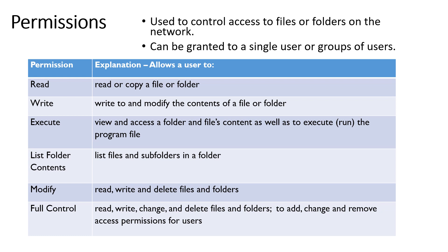Different permissions include: read, where you can only read or copy from a file or folder; write, when you can modify the contents of a file or folder; execute, which means you can run a program; list folder contents, which allows you to look inside a folder; modify, when you can read, write, and delete files and folders; and full control, where you can do absolutely anything with the files and folders on the network.